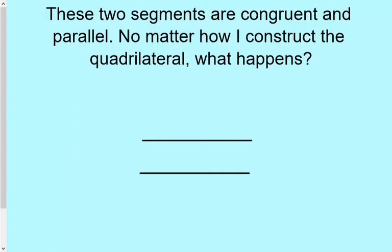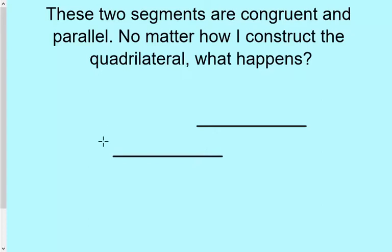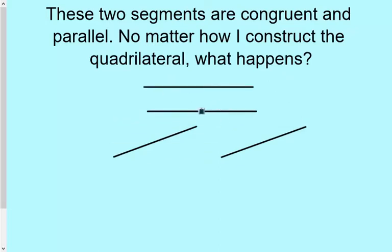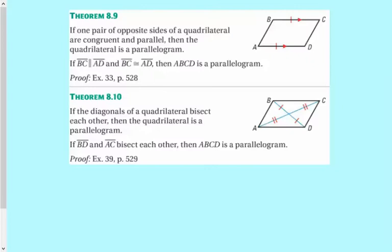This is an interesting one. It says that no matter what, basically, however I move these, if I make the quadrilateral, so if I connect, if I move these like this, and then I draw in these two sides there, it makes a parallelogram. Or if I move them really close. It makes a parallelogram. So this is the idea that 8.9 is. If you have one pair of opposite sides of the quadrilateral that are congruent and parallel, then the quadrilateral is a parallelogram.